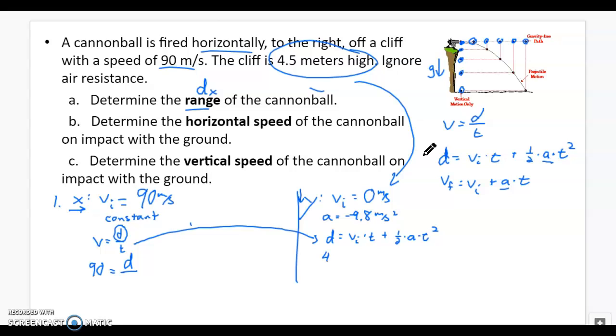So because that vertical distance is 4.5, but it falls 4.5, I make this negative and put that in place of D. The initial speed, it is zero times the time, that's what I'm going to solve for, plus one half, or you can use 0.5, times the acceleration, it's negative 9.8, times the time squared. That's what I'm going to do. So I'm going to go through and simplify some things.